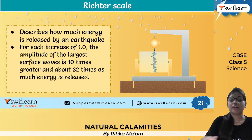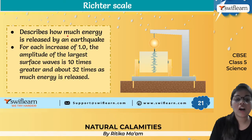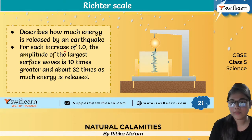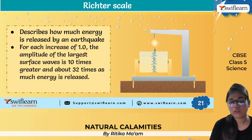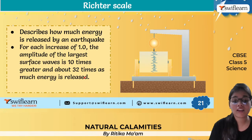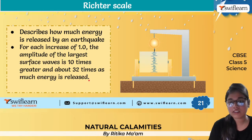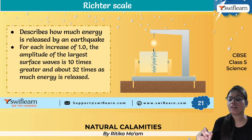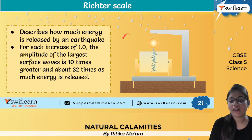The Richter scale describes how much energy is released by an earthquake. For an increase of one on the scale, the amplitude of the largest surface wave is 10 times greater, and about 32 times as much energy is released. So even a difference of one number can lead to a 10 times greater effect.